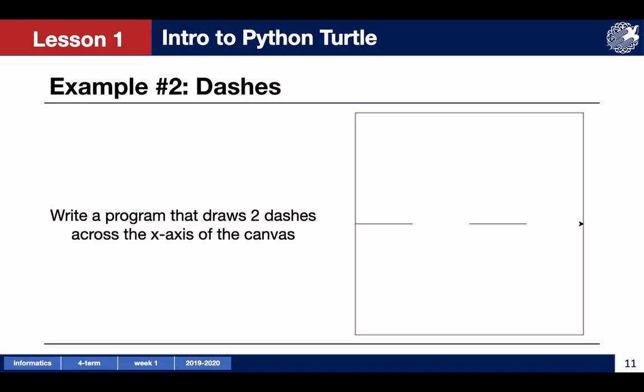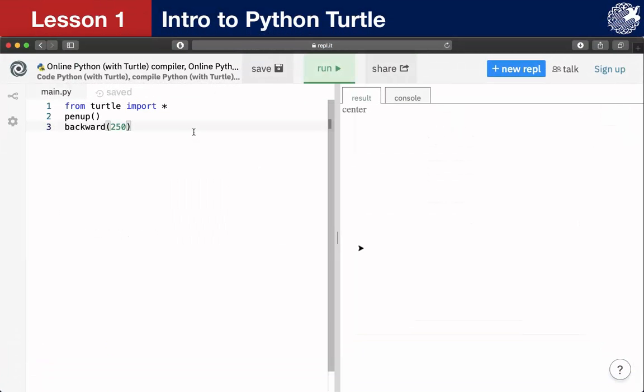It means we start from drawing a dash with 125 pixels length. To do so, we must start leaving a trail by writing pen down command. After it, we write forward 125. Let's check it again. Everything is fine till now.